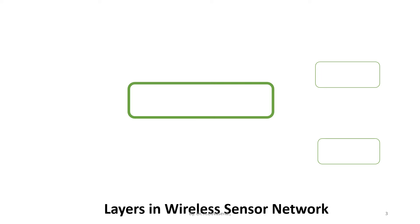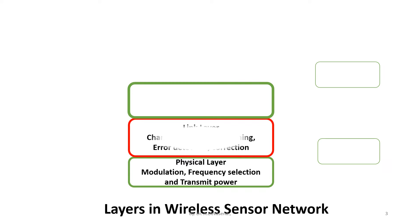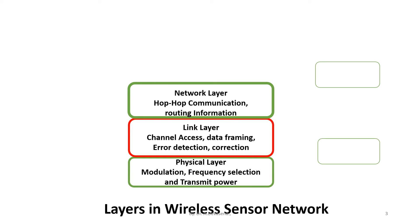Let us start discussing the layers in wireless sensor network. The first layer is the physical layer, which is responsible for modulation, frequency selection, and transmit power in a particular sensor network. The second layer is the link layer, which is responsible for channel access, data framing, error detection and correction.